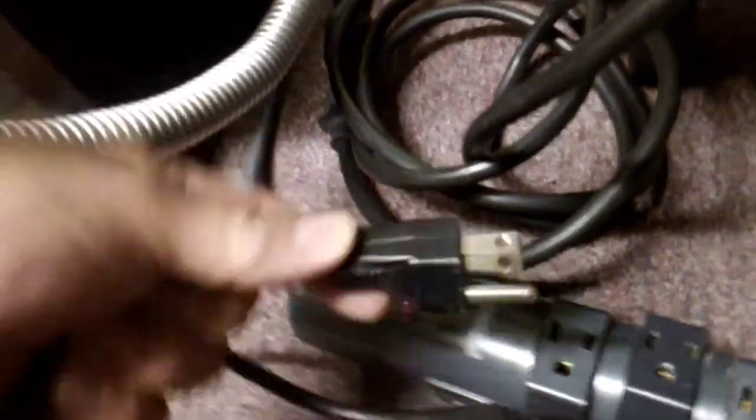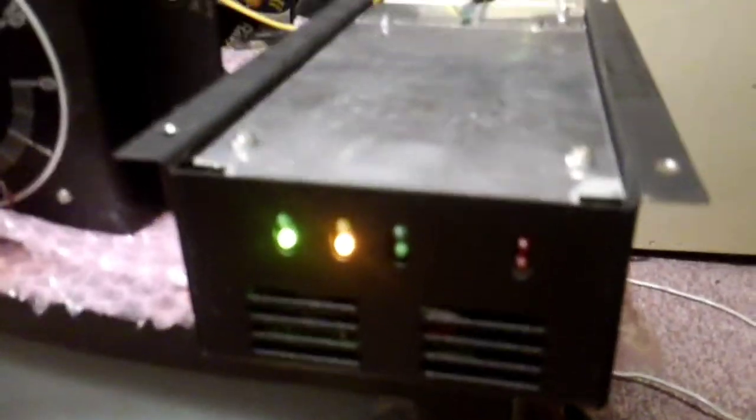So I'm at about 175 millitorr and this is how I'm going to activate the pump. Just plug in the variable transformer and you can see the yellow light is on indicating that it's accelerating.